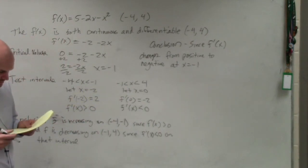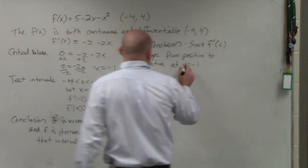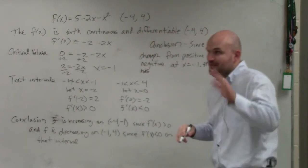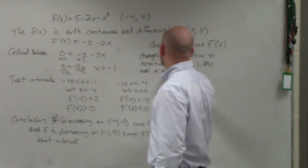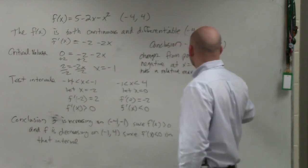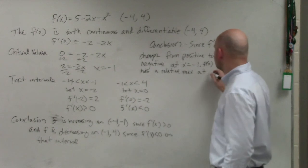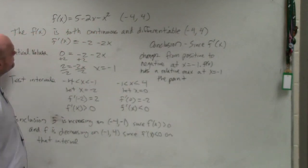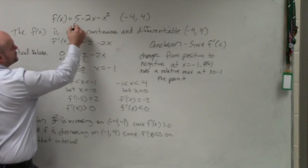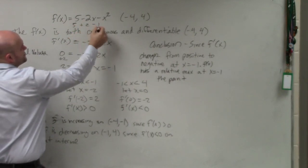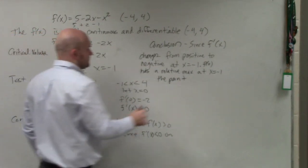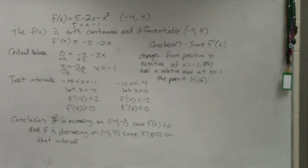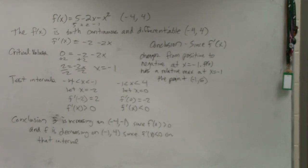We're just highlighting it's going from positive to negative. We're saying since it changes from positive to negative at x equals negative one, at the value of this point, it has a relative max. So let's say x has a relative max at x equals negative one, or you could say the point. And you could plug in negative one into your function. You'd have five plus two minus one, so that would be six. We'll be doing some practice on these a little bit more.